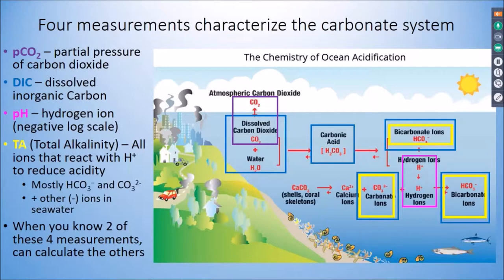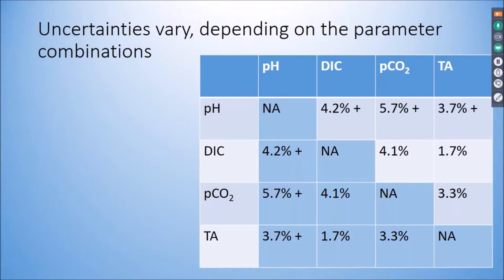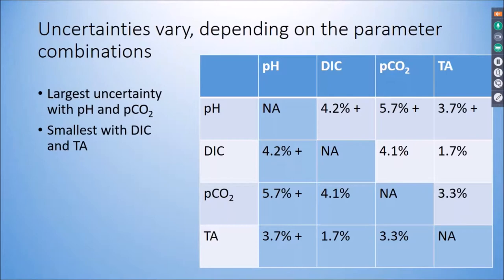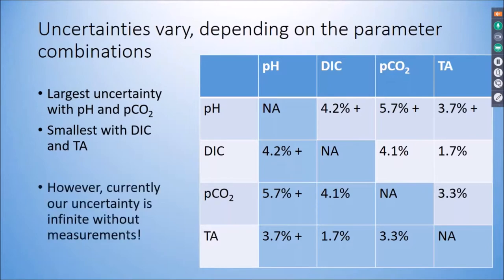When you know any two of these four parameters, you can calculate the others because of the interrelationship of the chemical equations. If you choose different parameter pairs, you get different uncertainties when calculating the carbonate system. The largest uncertainty — about 5.7% — occurs when you combine pH and pCO2. The smallest uncertainty — about 1.7% — is with DIC and total alkalinity. However, currently our uncertainty is effectively infinite if we don't have any measurements at all.